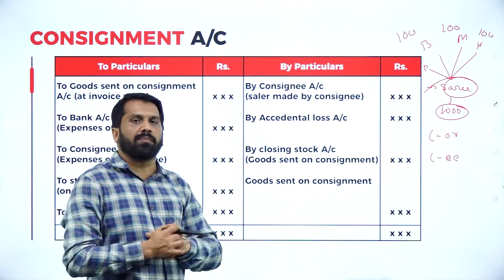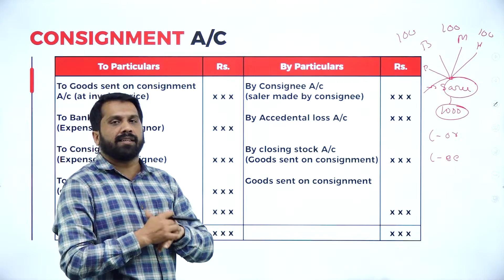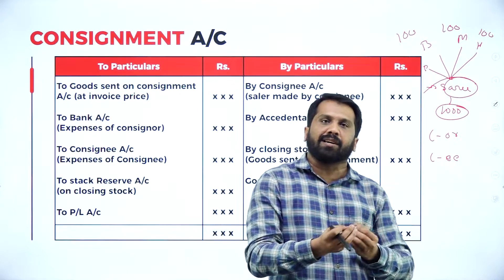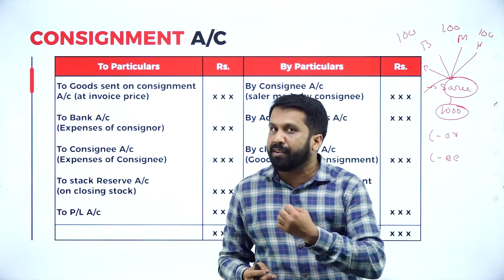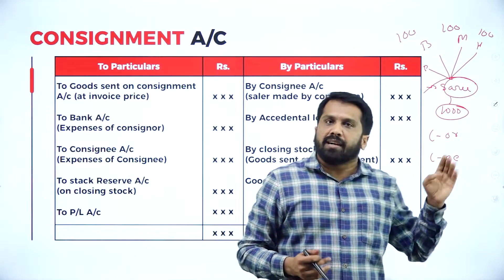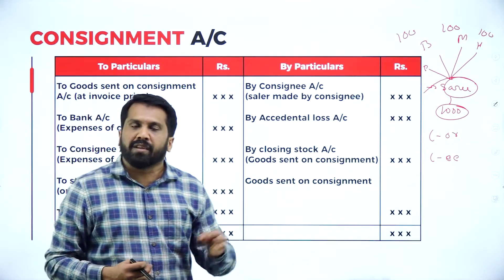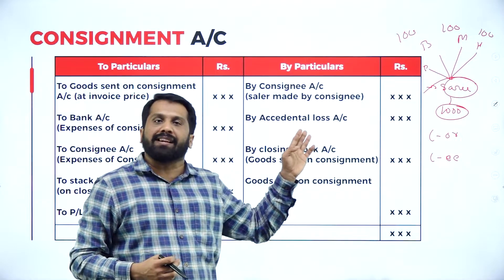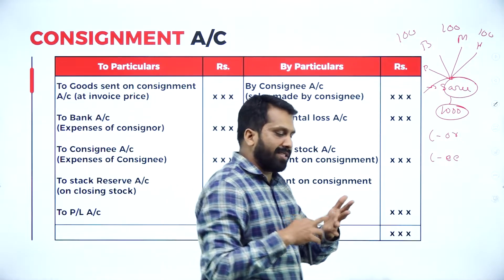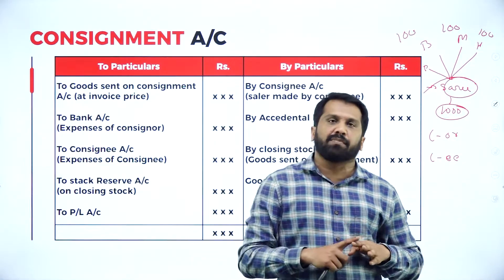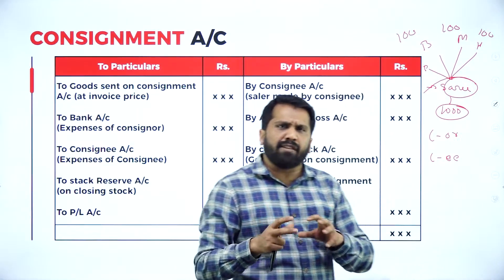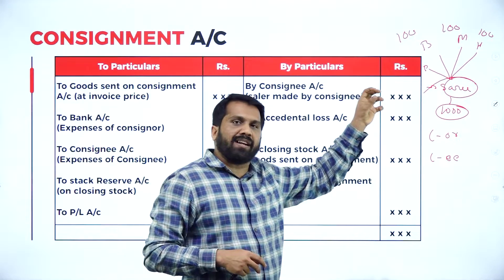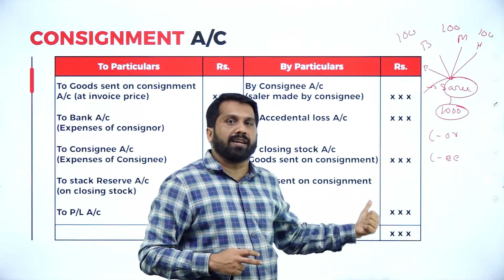Once he has sold all my saris, whatever amount he collected — 80,000 or whatever — he has to give it back. I manufactured, sold by the agent, who is a third person. At the time of sales, he requires expenses: transportation, advertisement, storage, marketing expenses. Everything will be spent by the agent. Whatever he spent, that will be reimbursed by the owner.